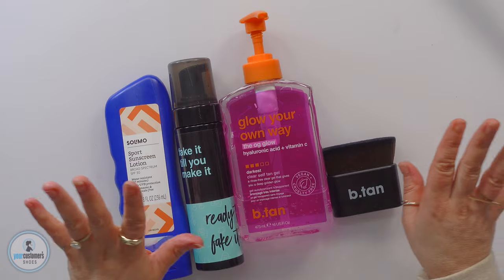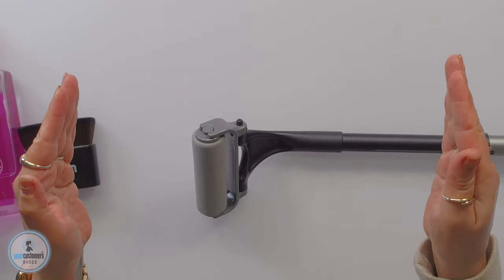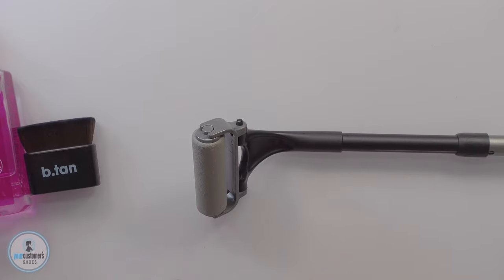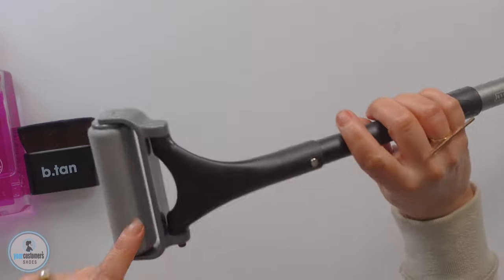But guys, if you self-tan at all, this is my personal favorite self-tanner and favorite sunscreen. You need this. These are your shoulders, you know, the little triangle at the top of your back where you can't get your little paws to put the stuff.